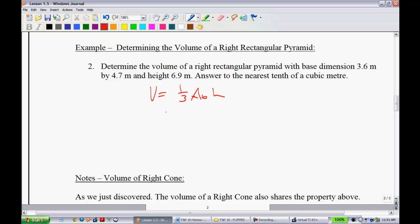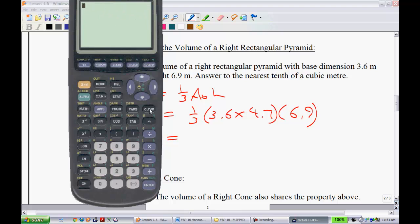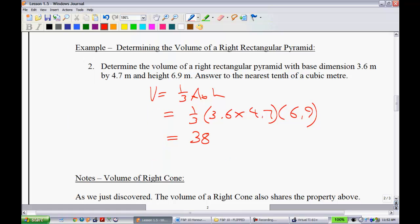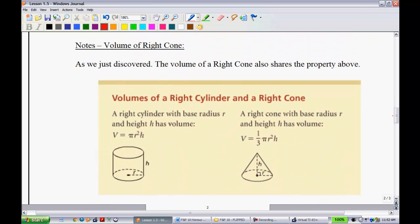Volume equals one-third area of the base times height. I do like you to write that down. Area of the base is 3.6 times 4.7 and the height is 6.9. Very quick we can do this. We get one-third of 3.6 times 4.7 times 6.9 and we get 38.9. I think it asked you for the nearest tenth of a cubic meter, so 38.9 meters cubed. Make sure you saw that part. Very basic as far as dealing with volume. I don't think you guys will find this lesson too tough.